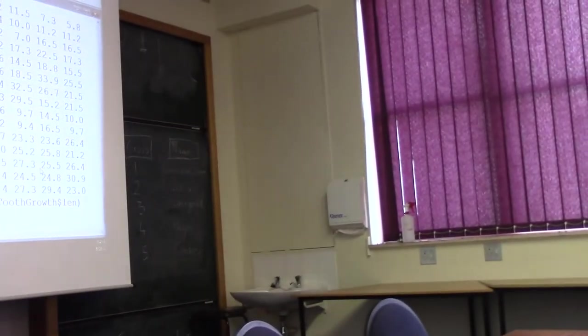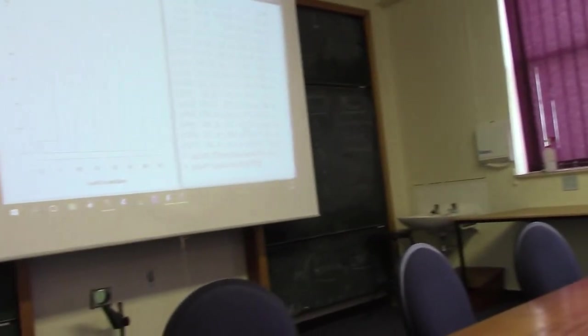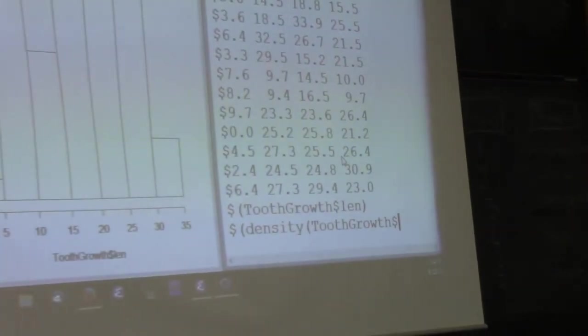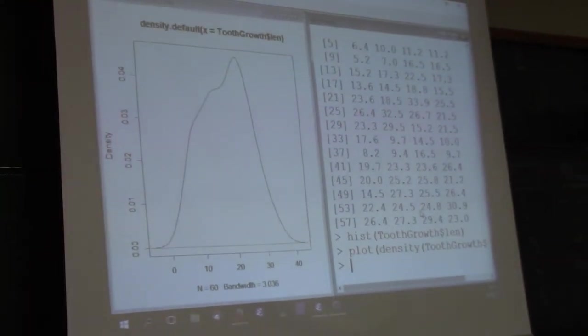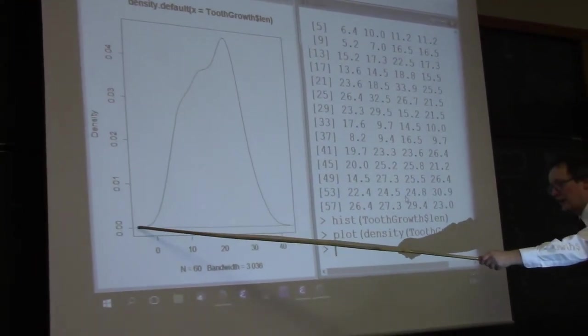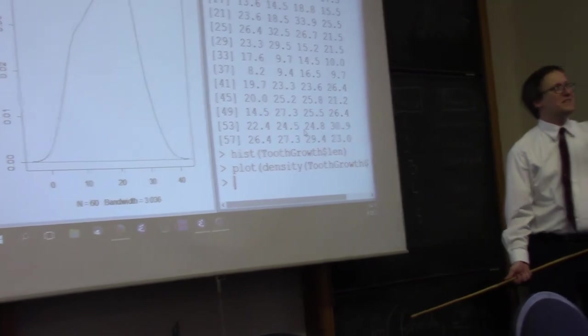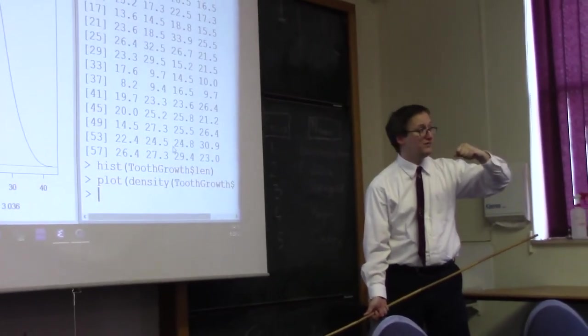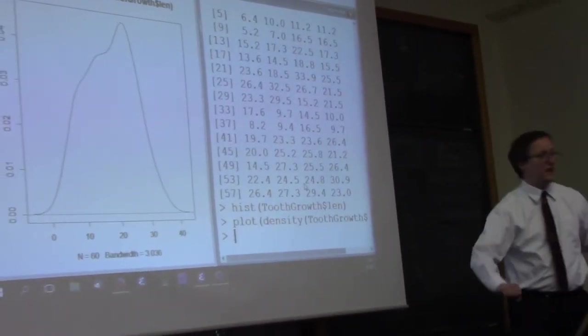But sometimes these histograms are a little chunky, and you'd like to know about the density of these data across a number line. So, for that, we can use a density function. So, plot density, not density, density, tooth growth length. Okay. So, now, R has used a kernel. A kernel has effectively rolled across that number line and asked what's the density of data points in the neighborhood of this kernel. So, plot density of tooth growth shows us the visualization of that impact as we moved across.